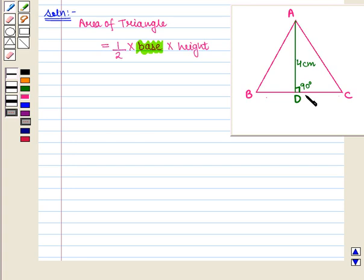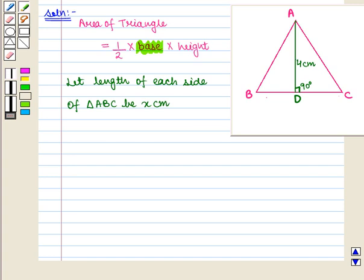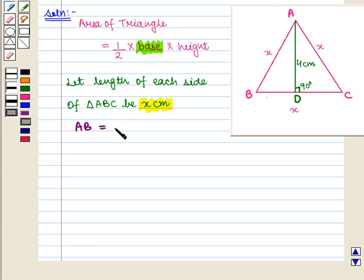Since it is an equilateral triangle, the length of all sides is equal. So we let the length of each side of triangle ABC be x cm. That is, AB is equal to BC is equal to CA is equal to x cm.